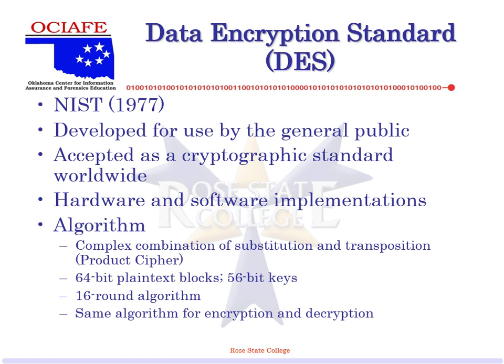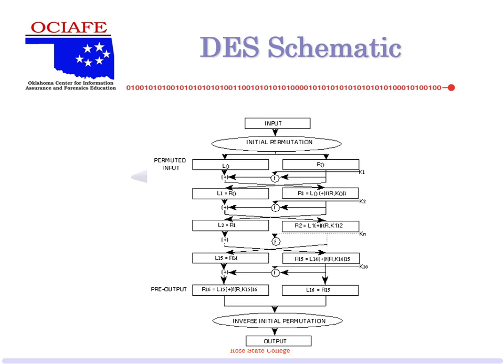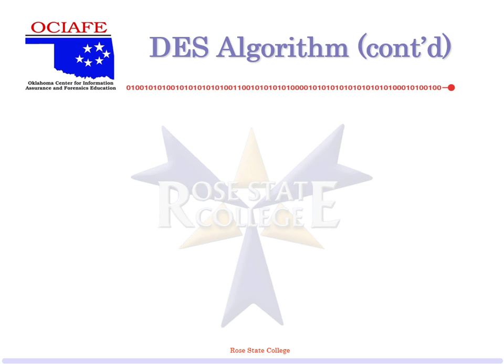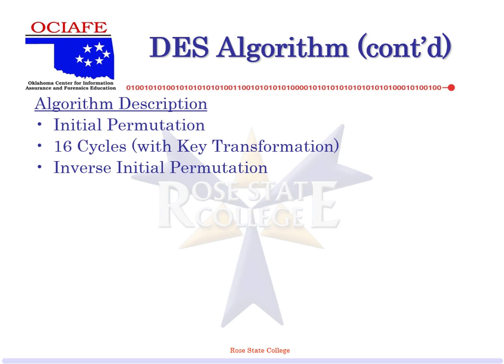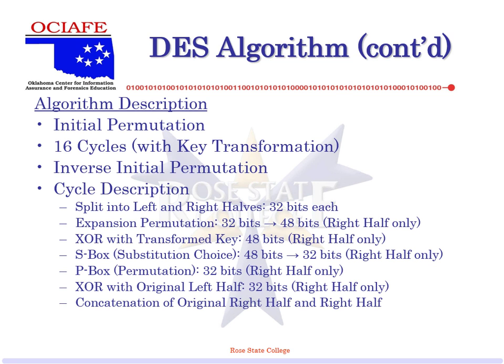16 rounds — why? We're going to learn more about that. Basically we do something at the beginning, break it apart, do a bunch of other stuff 16 times, and then we end up with our output. So let's talk about how it actually works. We have the initial permutation, then we go through 16 cycles with the key transformation — using a key that's being manipulated — then we undo what we did at the beginning to get a result. Those three steps are really all you need to know.